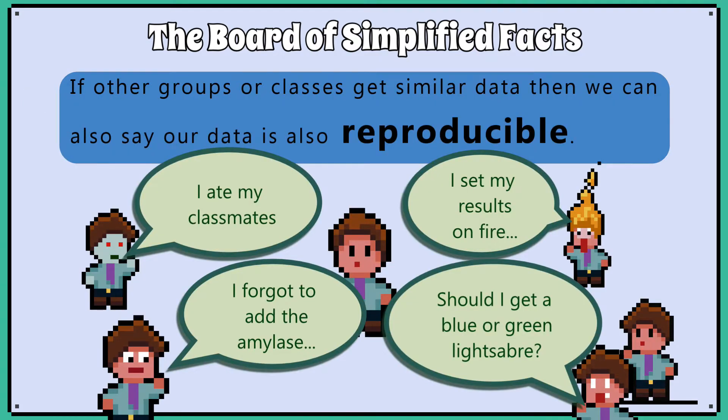If other groups or classes get similar data, then we can also say our data is reproducible.